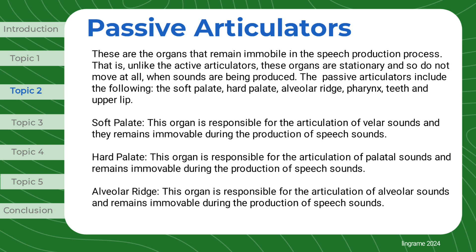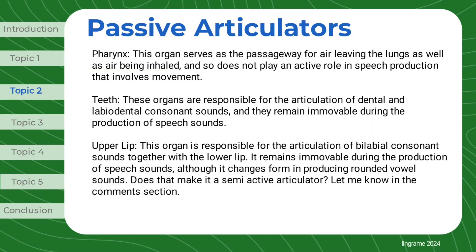The soft palate is responsible for the articulation of velar sounds and remains immovable during the production of speech sounds. The hard palate is responsible for the articulation of palatal sounds and remains immovable during the production of speech sounds. The alveolar ridge is responsible for the articulation of alveolar sounds and remains immovable during the production of speech sounds. The pharynx serves as the passageway for air leaving the lungs as well as air being inhaled, and so does not play an active role in speech production that involves movement.